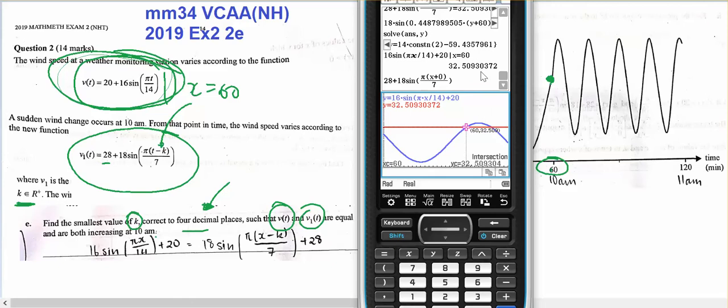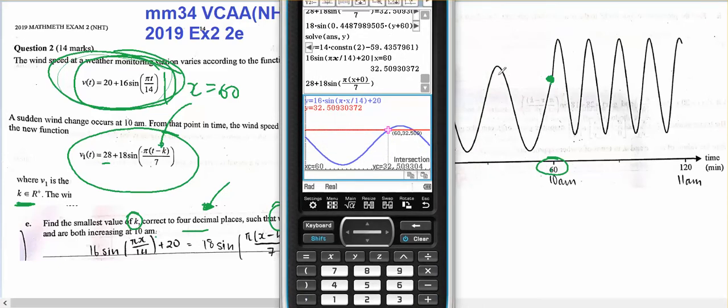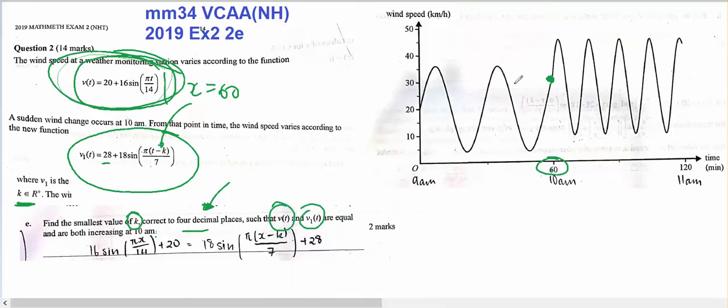Okay, so the blue curve is this curve up into here, and I've got that red line which is 32 point something, and that's the value of v of t at t equals 60.